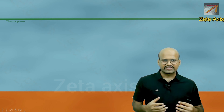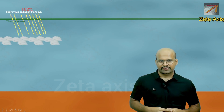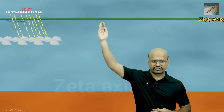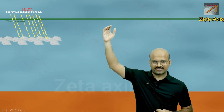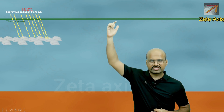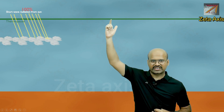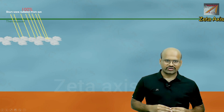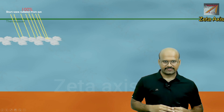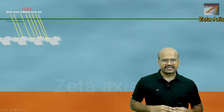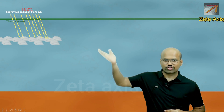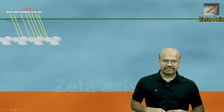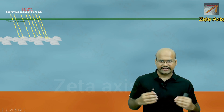Let's evaluate the heat budget of Earth by calculating with reference to the thermopause. All the solar radiation received at the thermopause is considered 100%. Any radiation released by Earth that crosses the thermopause is considered the amount of energy released by Earth to space.